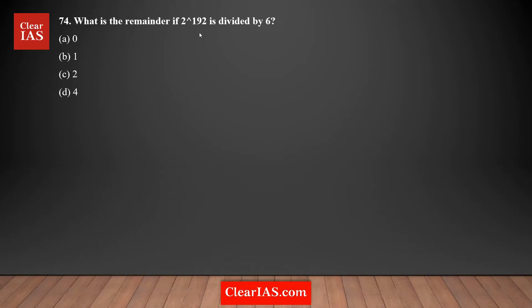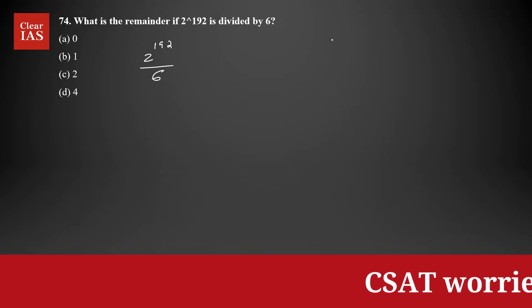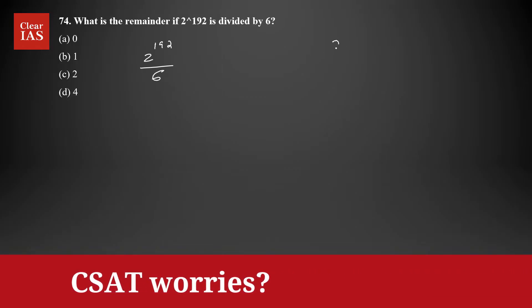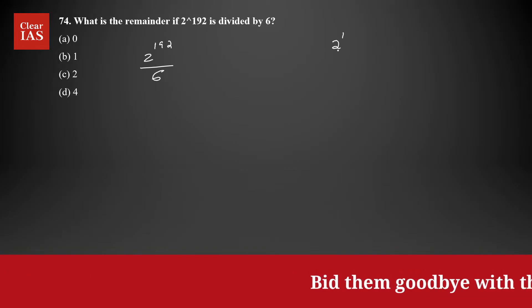I need to find the remainder when 2 to the power 192 is divided by 6. It's not practical to divide this entire number directly, so the best idea is to figure out a pattern. Let's start with small powers of 2, beginning with 2 to the power 1.